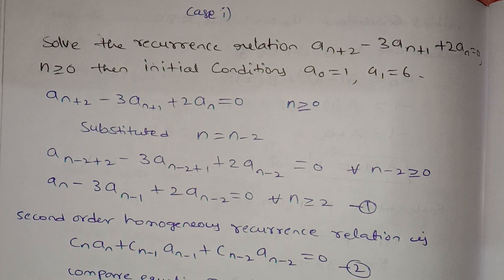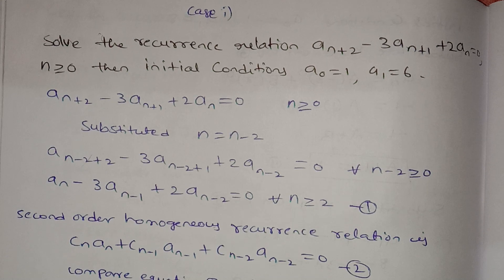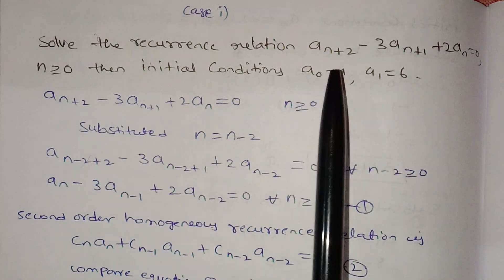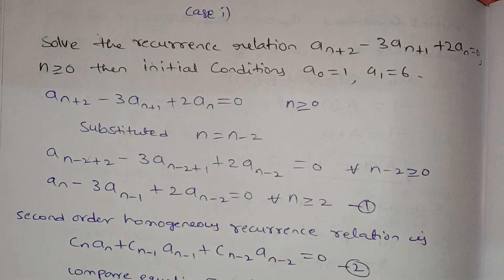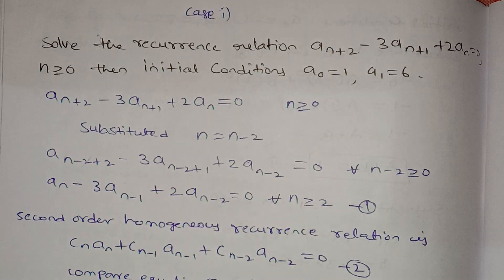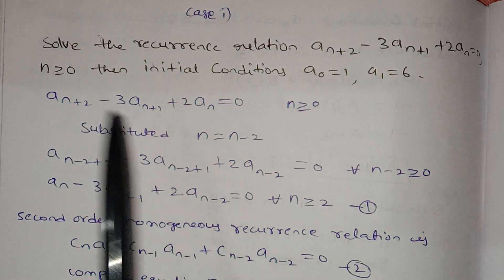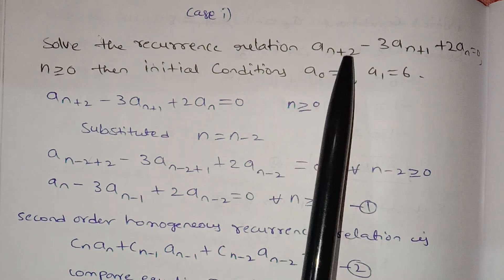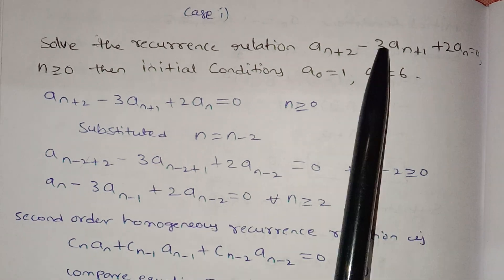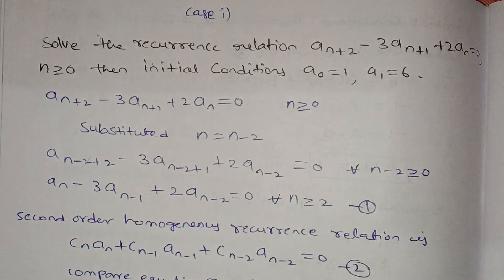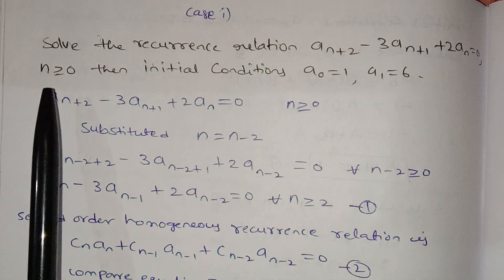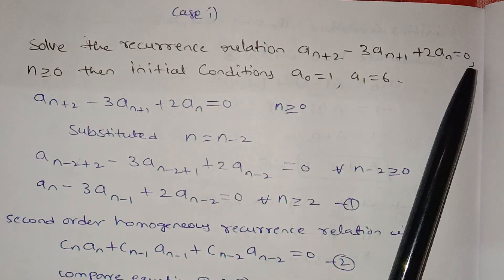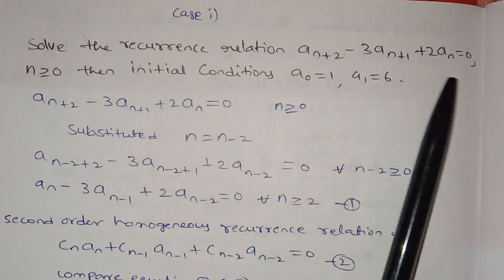One way to approach the second order recurrence relation — we need to check if it is homogeneous. Given a, f(n) equals to 0, then it is homogeneous. If f(n) is a different number, then it is non-homogeneous.